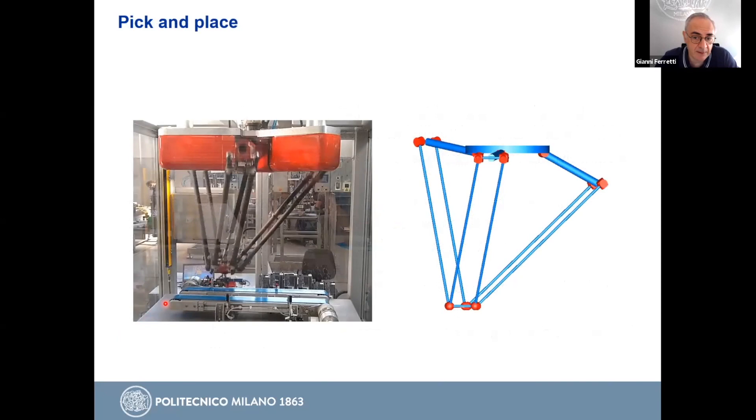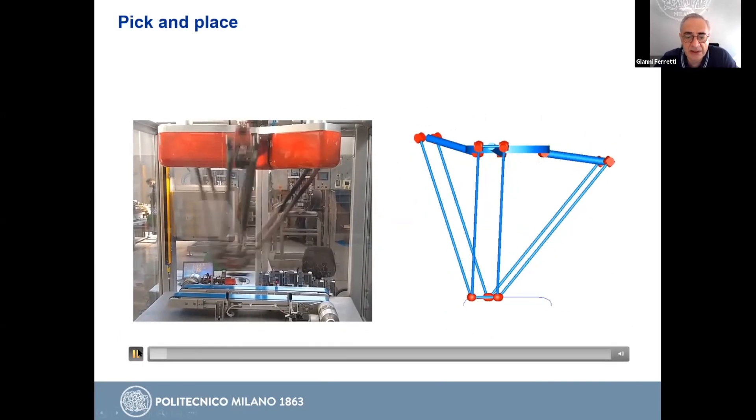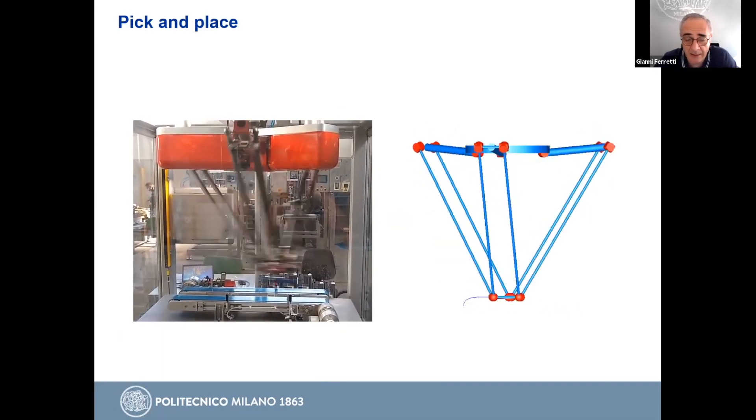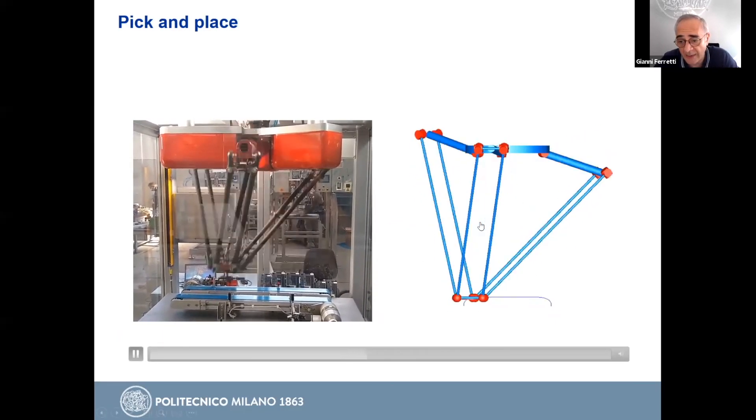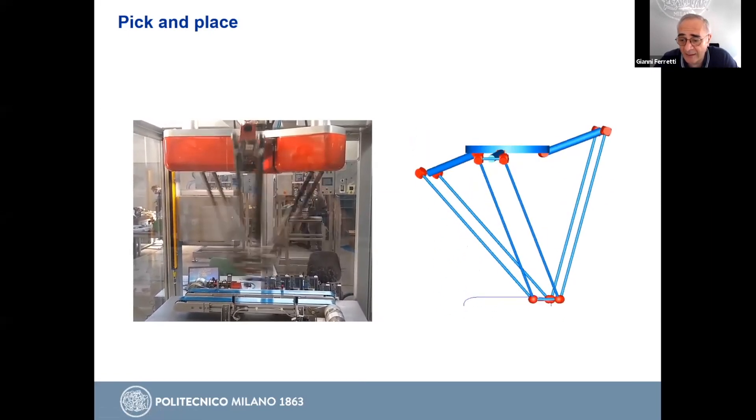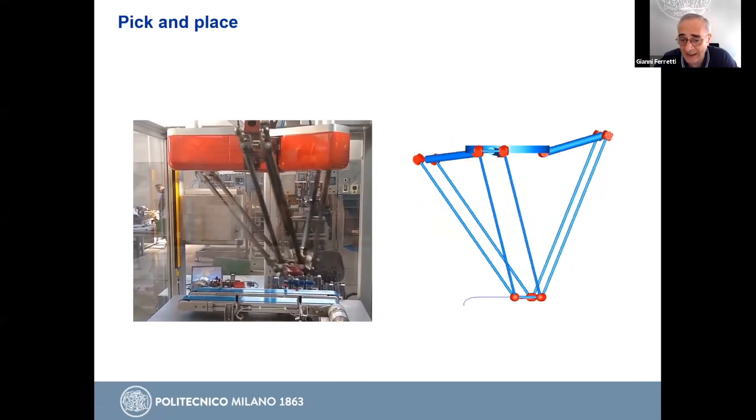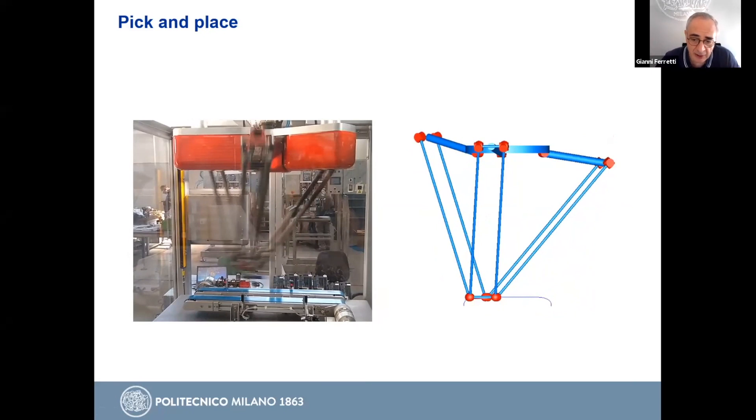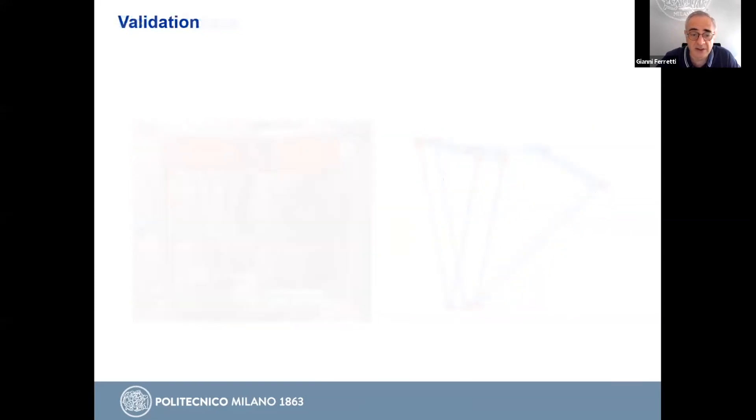This is a validation transient. Here you can see a pick and place operation. On the left, the real robot, on the right the model. In order to validate our model with respect to experimental data, since the controller structure was not precisely known, we consider industrial controllers, but the parameters of the controllers were not known. We performed the validation by imposing the positions and the velocities of the end effector and then computing the torques applied by the model. Then these torques were compared to the measured torques on the real robot.